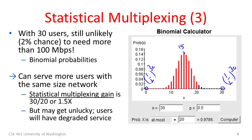The key point we can see here is that we expect mostly between 10 and 20 users using the network — it's very unlikely we'll have either fewer or more than that. Given this arrangement, our network can serve more users even though it's the same size.